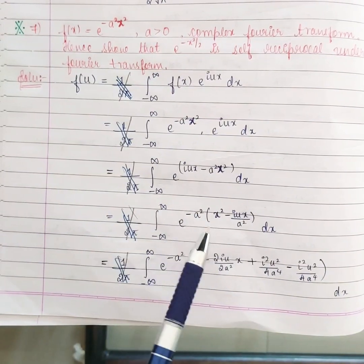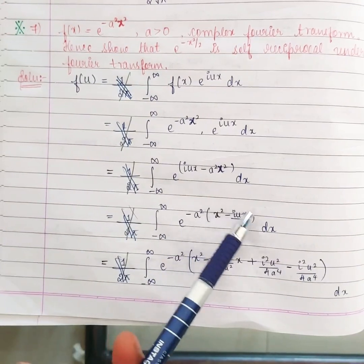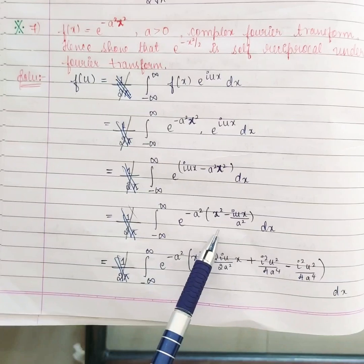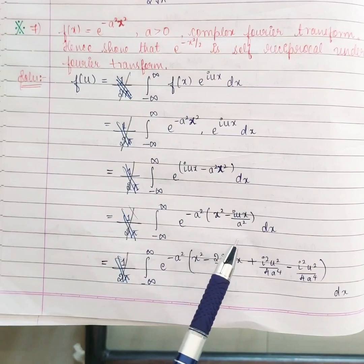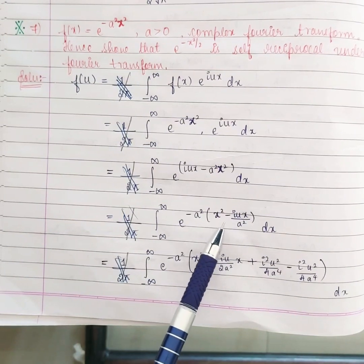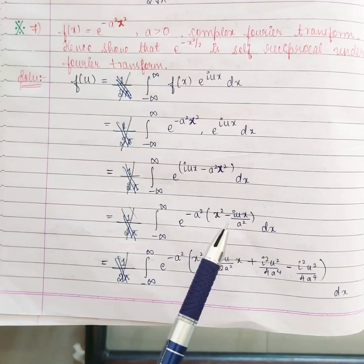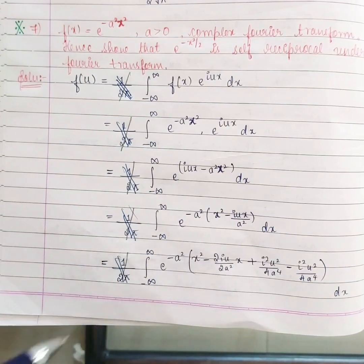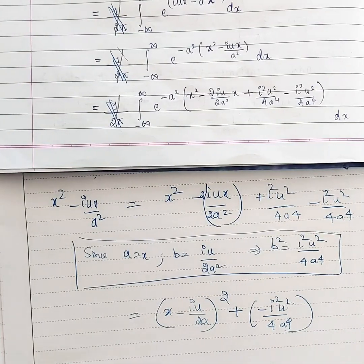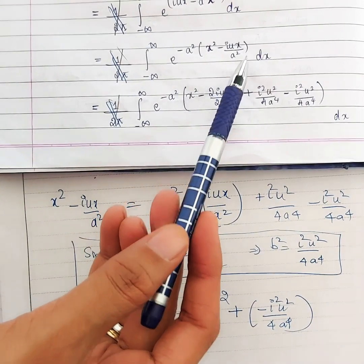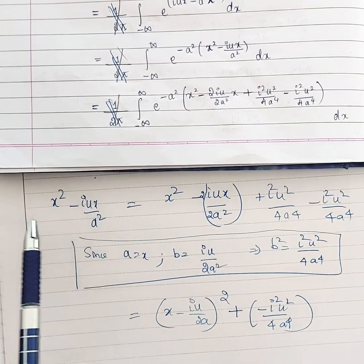This problem is slightly different from other problems because we have e^(-a²) times some term inside, and we cannot integrate it directly. So we are going to use the method of completing the square, since whenever e^(-something) appears we use a formula to find the integral value.